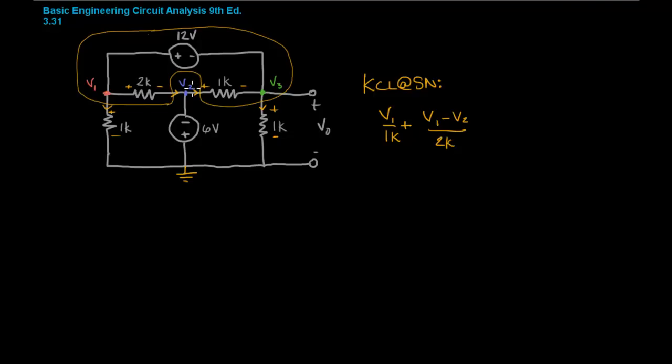And then this one is entering the node, so we'll put a minus sign in front. V2 is at a higher potential than V3 because of the current that we've chosen. So V2 minus V3 over 1k. And then finally we have this current that's leaving the node, V3 minus zero because the polarity tells us that this is at a higher potential than ground, so V3 over 1k and all of this equals zero.